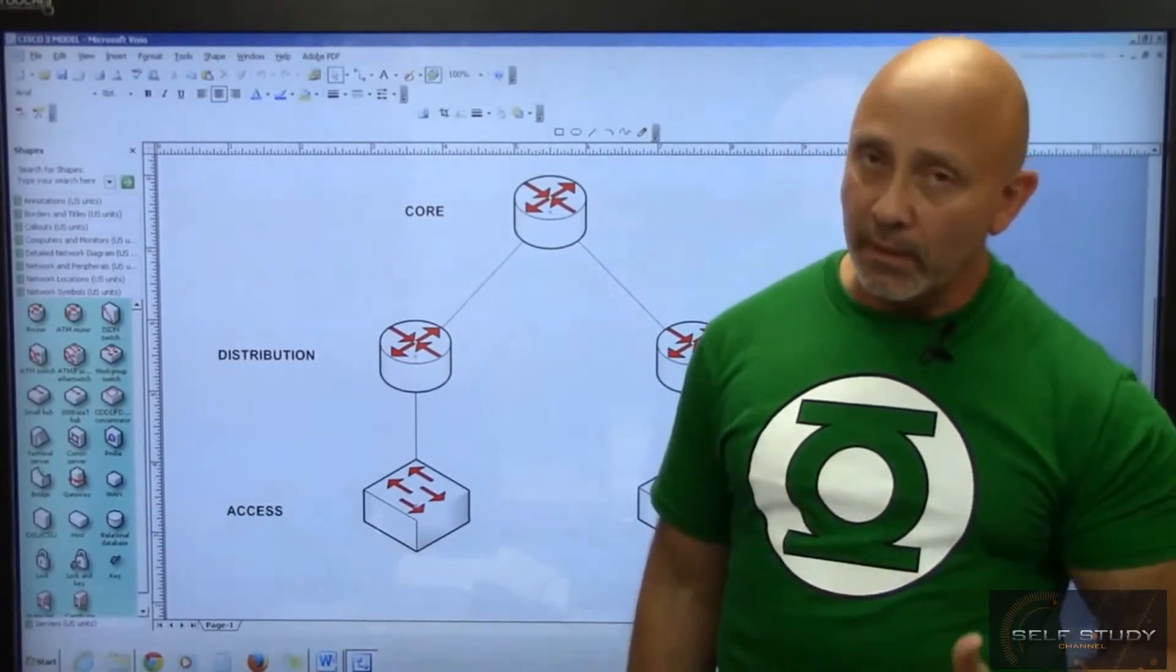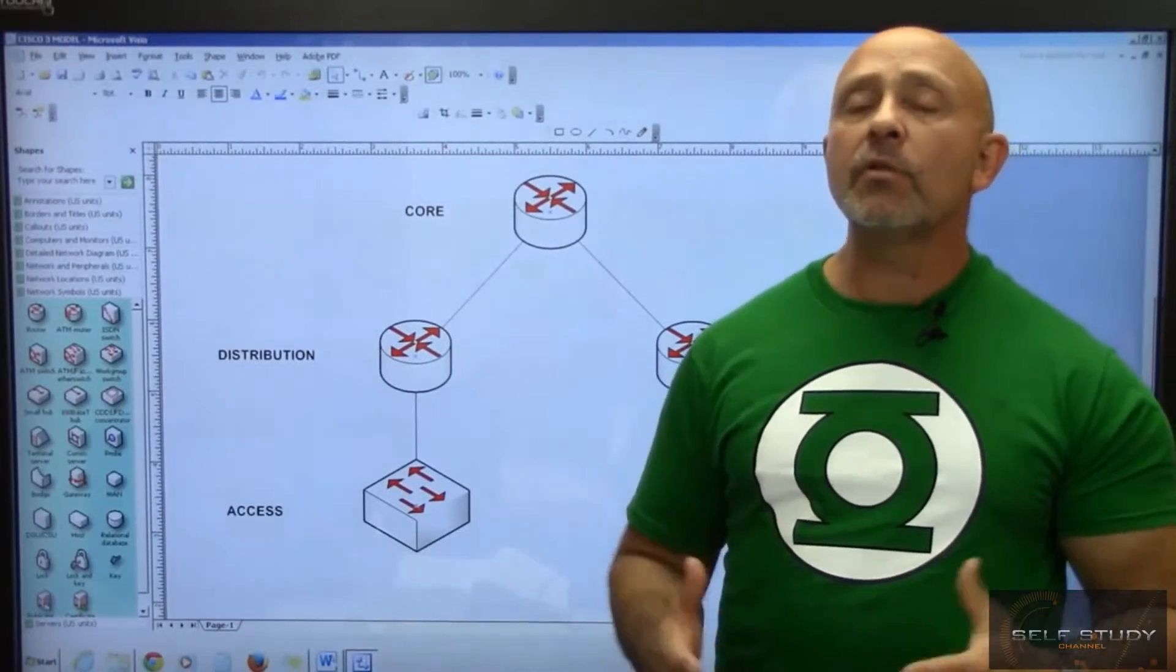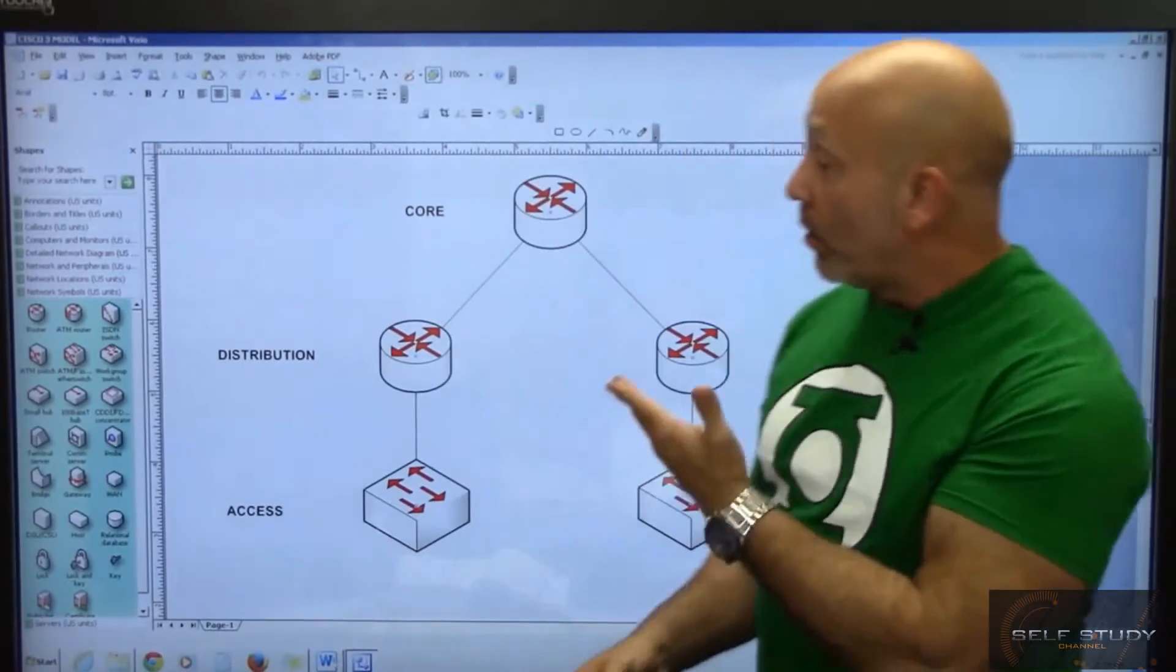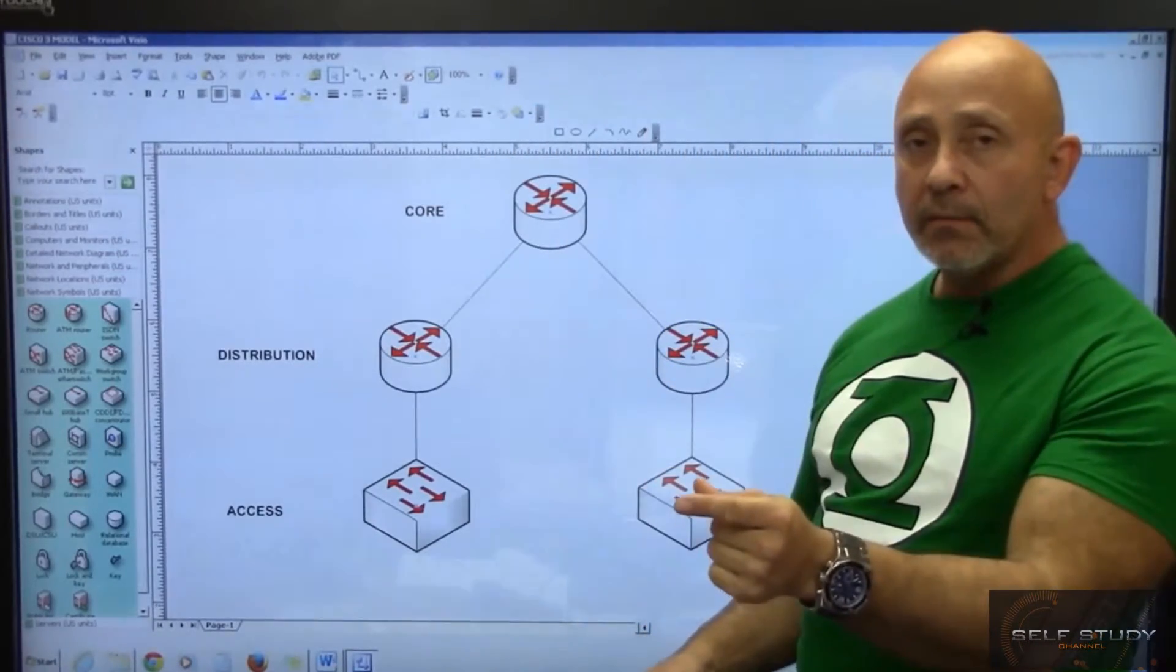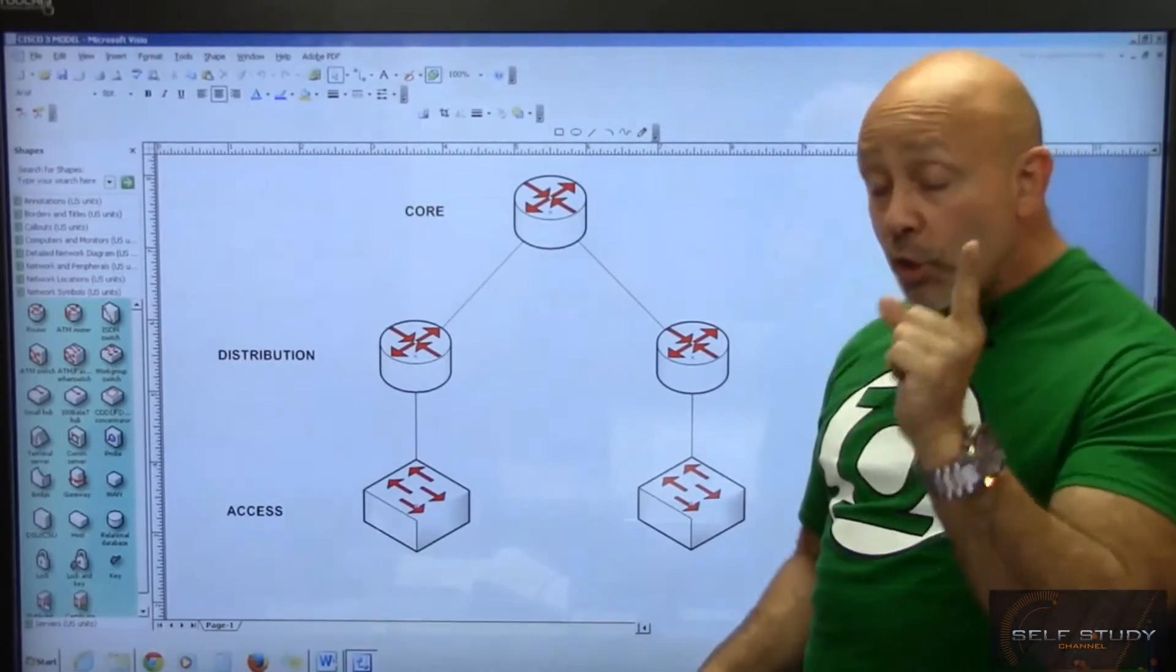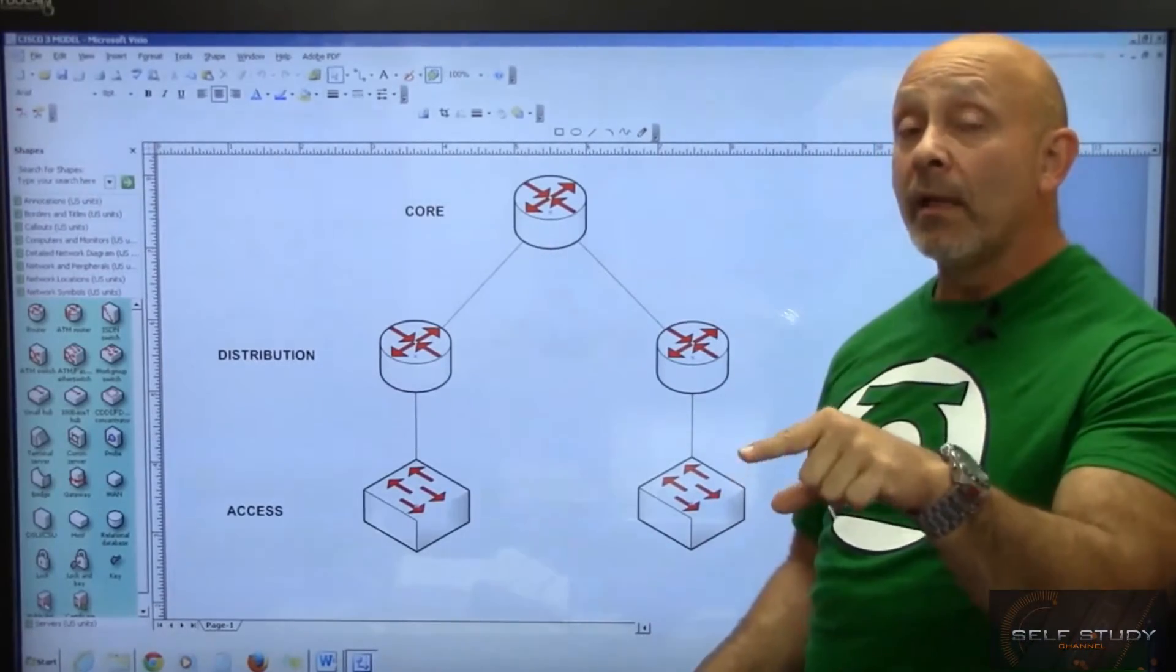Just have an idea of what to do. Again, core layer: speed and redundancy, very important. Choose the right type of routing—are you going to use a dynamic routing protocol, and which routing protocol?